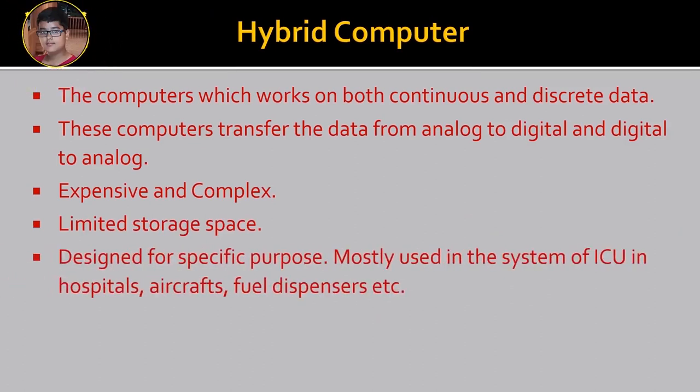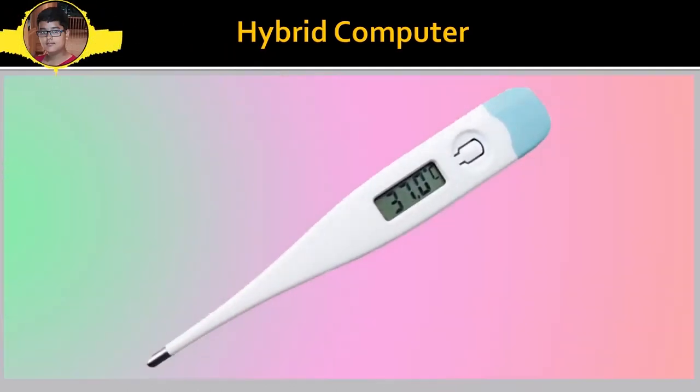Mostly uses in ICU, hospitals, aircraft, fuel dispensers and many more. This is a Thermometer which provides us the Temperature in Digital form. But, it measures the Temperature with Mercury and Mercury is Analog. So, this is a perfect and good example of Hybrid Computer.